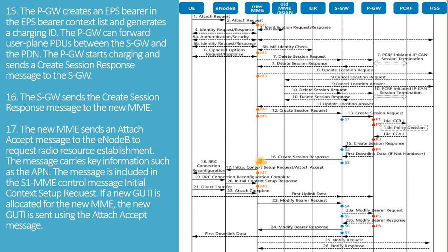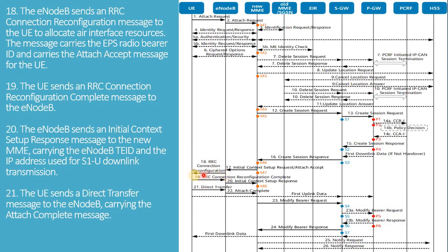The new MME sends an attach accept message to the E-NodeB to request radio resource establishment. The message carries key information such as the APN and is included in the S1 MME control message Initial Context Setup Request. If a new GUTI is allocated for the new MME, it is sent using the attach accept message. The E-NodeB sends an RRC message to the UE to allocate air interface resources, carrying the EPS radio bearer ID and the attach accept message. The UE sends an RRC connection reconfiguration complete message to the E-NodeB, which then sends an initial context setup response message to the new MME carrying the E-NodeB TEID and IP address for S1-U downlink transmission. The UE sends a direct transfer message to the E-NodeB carrying the attach complete message.